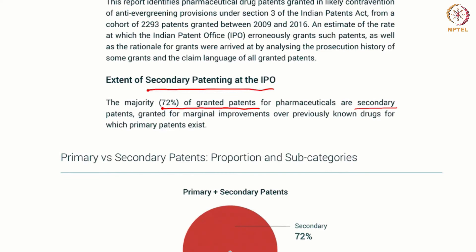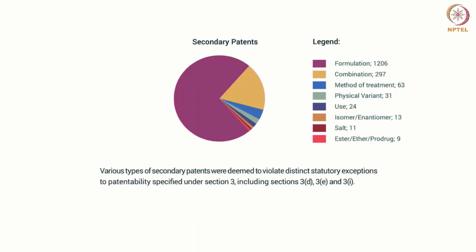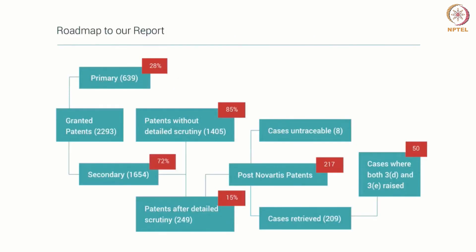Secondary patents presume that there is a primary patent before them, and only a small improvement or modification — what we call marginal improvements — is covered. We also give the breakdown of secondary patenting in pharmaceuticals: it could be for formulation, combination, method of treatment, physical variant, new uses, isomers, salt, ether, ester, and prodrug. This is the roadmap of our report.